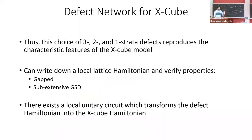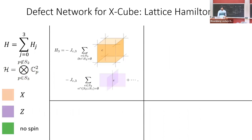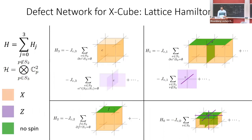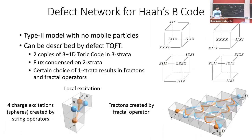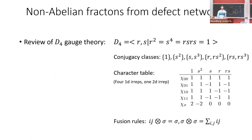Through this choice of gapped boundaries, we're able to reproduce the mobility of the X-cube model. In this case, we can do even better — we have a local gapped Hamiltonian we can write down, and a unitary that we can apply to it to literally get the X-cube model. We also have a defect network for a type-2 model — Haah's code.